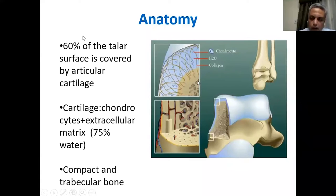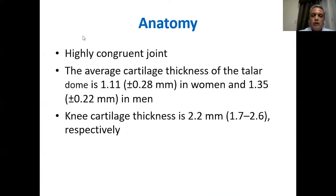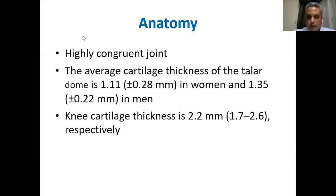Under this articular cartilage, you find a layer of compact bone supporting the cartilage and trabecular bone underneath. For the ankle joint, it is a highly congruent joint, with an average cartilage thickness of the talus dome of nearly 1.1 millimeters. It is a bit more in men, but compared to the knee, it is nearly half the thickness of the knee's articular cartilage.